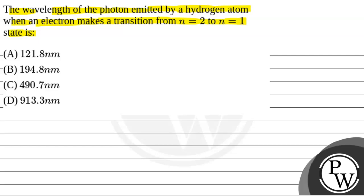We will solve this question. First of all, we will see the key concept used to solve this question. The key concept is 1 by lambda equals R Z squared times 1 by n1 squared minus 1 by n2 squared, where electron makes a transition from state n2 to n1.